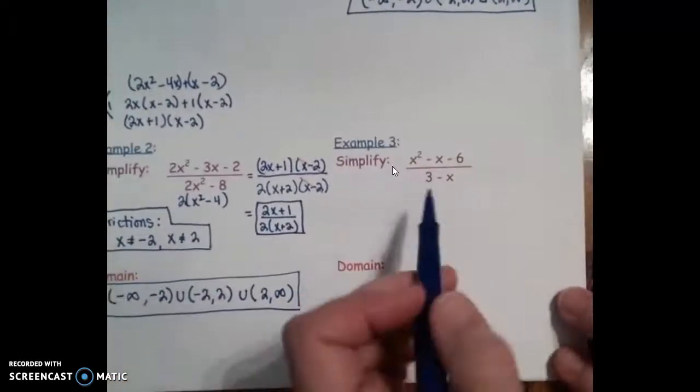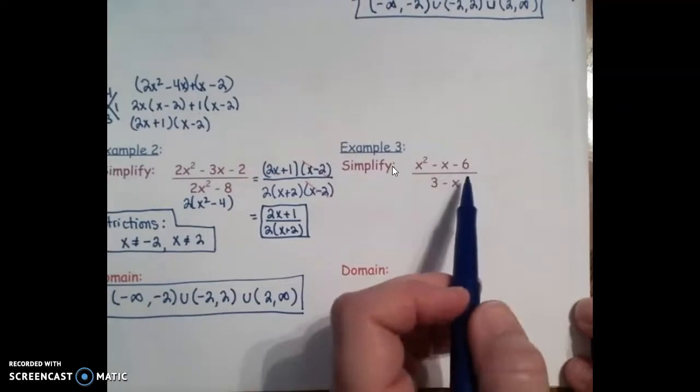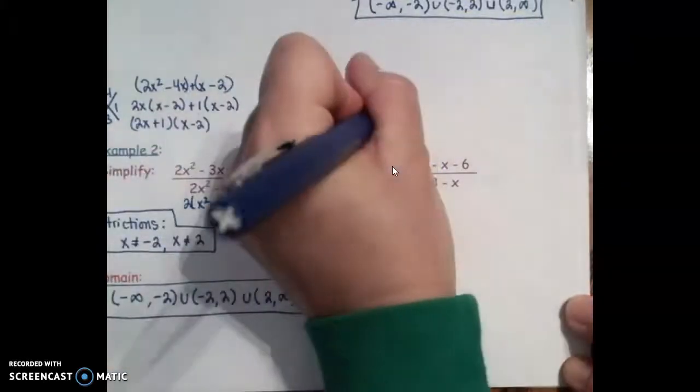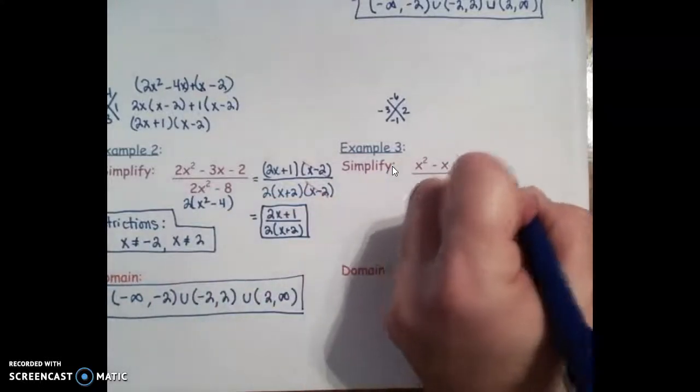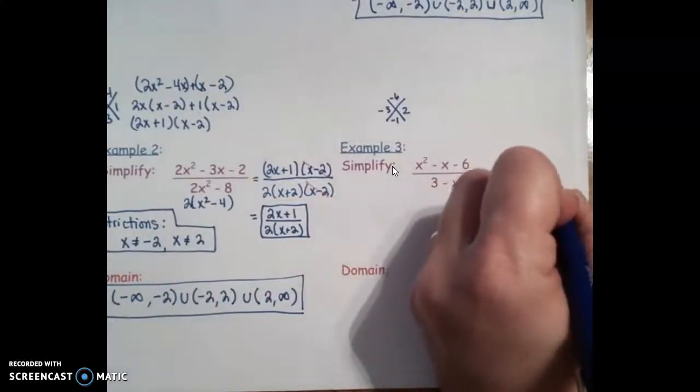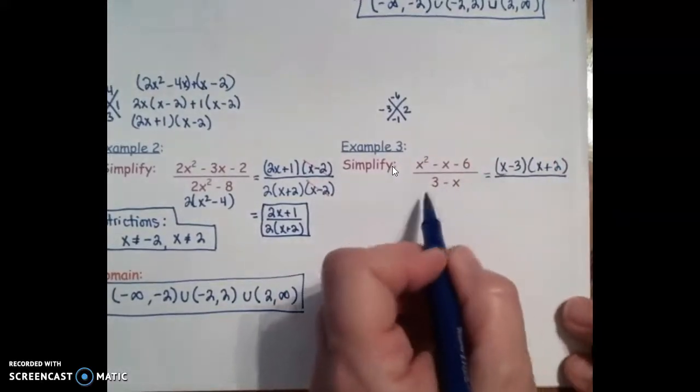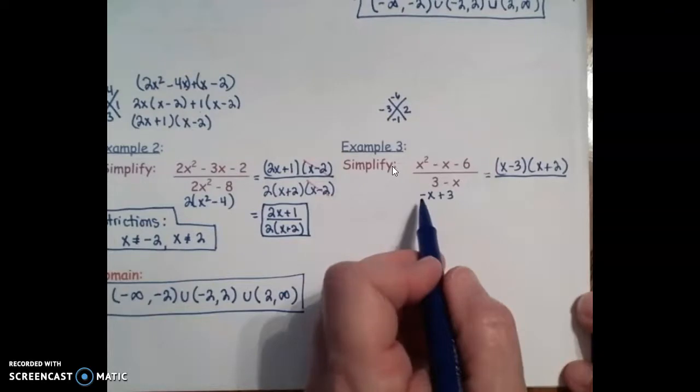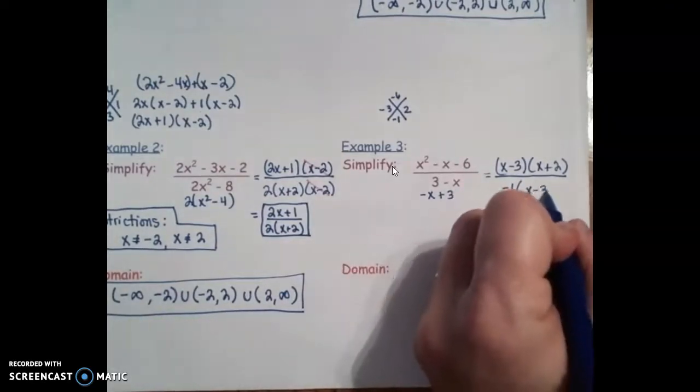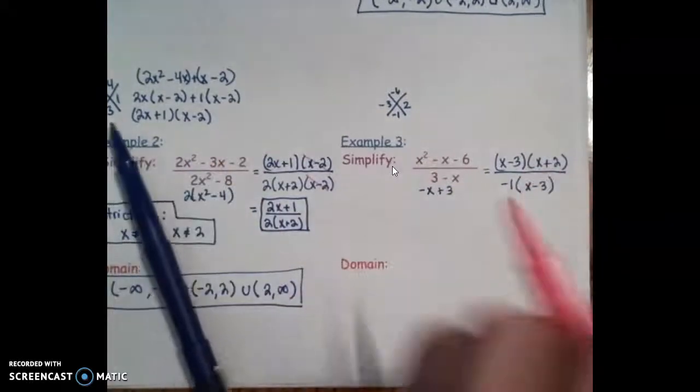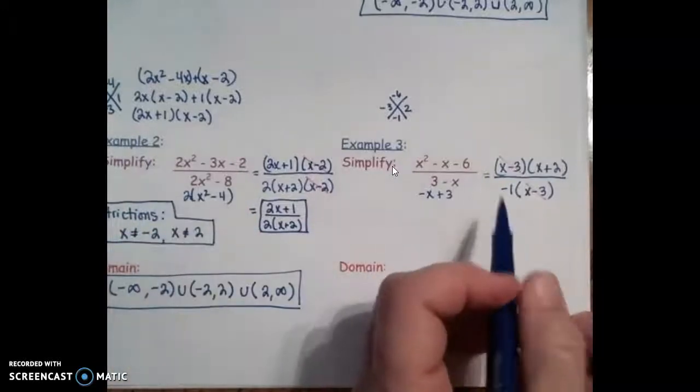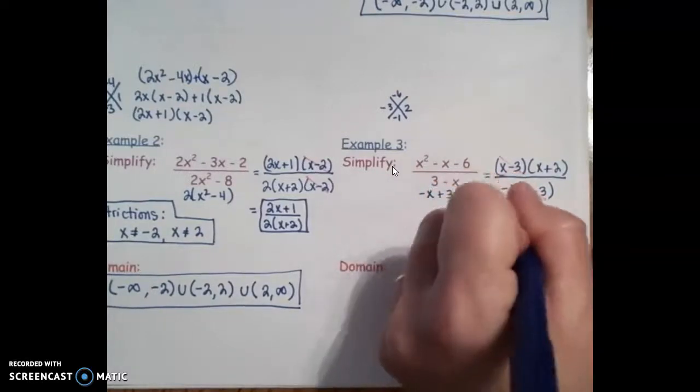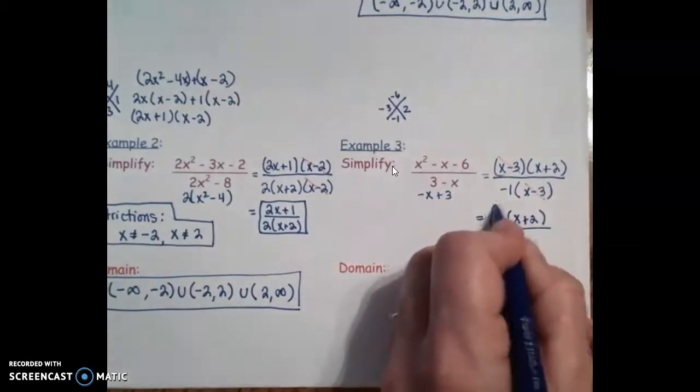Example 3. Again, quadratic in standard form. I'm going to do AC with this. So I need factors of negative 6 to give me negative 1. So that would be negative 3, positive 2. I can do the shortcut here. So x minus 3, x plus 2. This denominator, I'm going to rewrite. I'm going to turn this around to say negative x plus 3. Then I'm going to factor out a negative 1, which is going to leave me x minus 3 when I do that. So my common factors can be canceled out. So you have x plus 2 over negative 1, but we can just write that as negative 1 times x plus 2. That's the same thing.